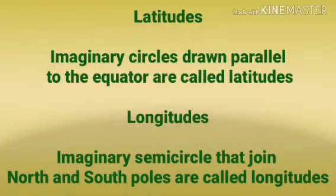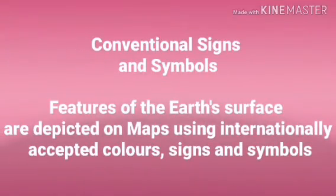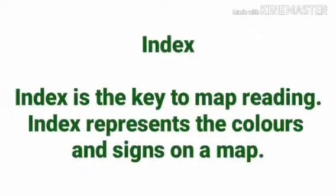Latitudes are imaginary circles drawn parallel to the equator. Longitudes are imaginary semicircles that join the North and South poles. Conventional signs and symbols: features of the earth's surface are depicted on maps using internationally accepted colors, signs and symbols. Index is the key to map reading; it represents the colors and signs on a map.